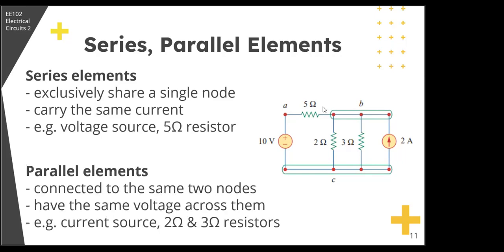Elements are in parallel if they are connected to the same pair of nodes. The 2 ohm, 3 ohm, and 2 ampere current source are connected to the same pair of nodes B and C. Consequently, if they share the same pair of nodes, they have the same voltage across them. For series elements, they have the same current. For parallel elements, they have the same voltage across them.